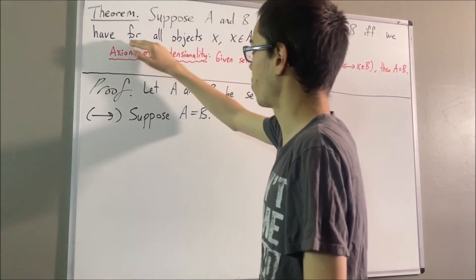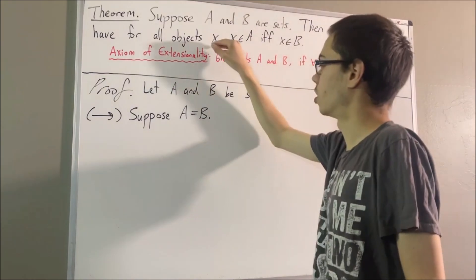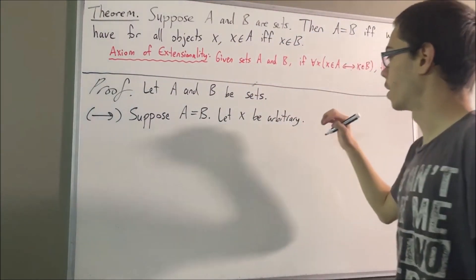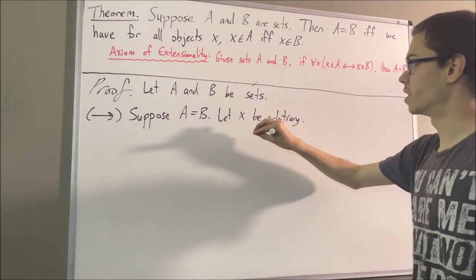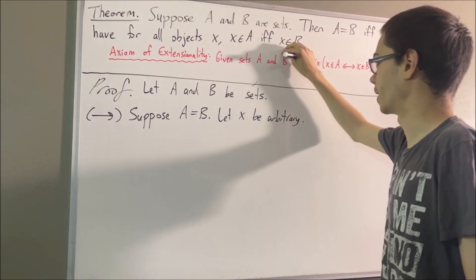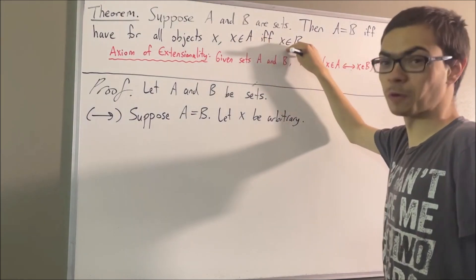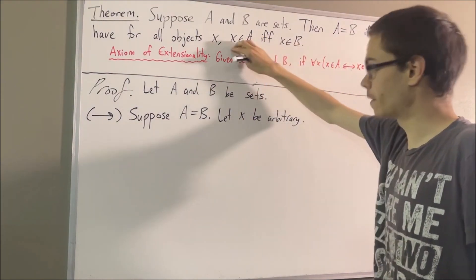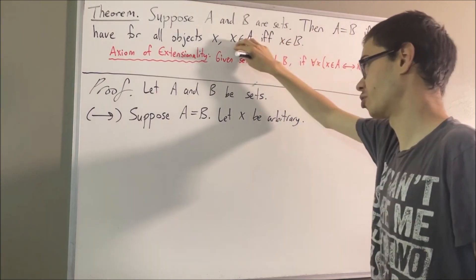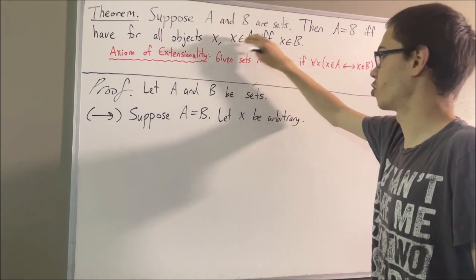Our goal now is to prove that for all objects X, X is an element of A if and only if X is an element of B. Since we're trying to prove a statement about all objects, let me take an arbitrary object — I'll call it X. Our goal with this object X is to prove X is an element of A if and only if X is an element of B. Again, we're proving an if and only if, so we prove each direction separately. Let's start by showing if X is an element of A, then X is an element of B.